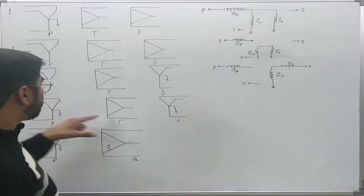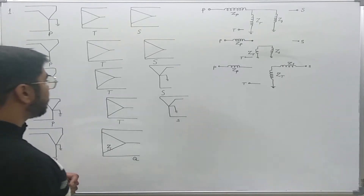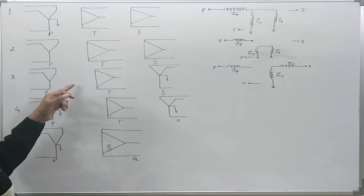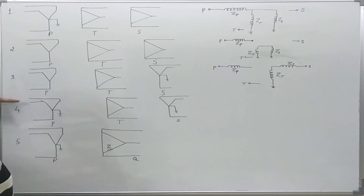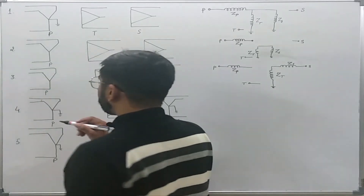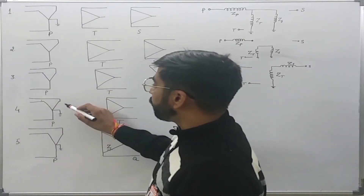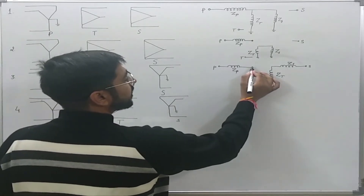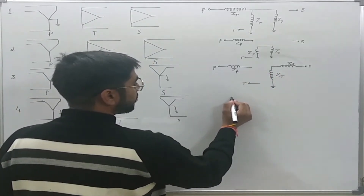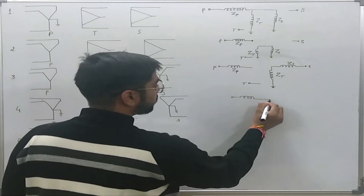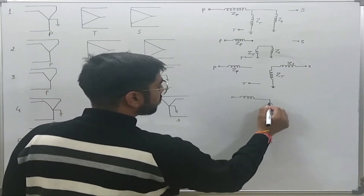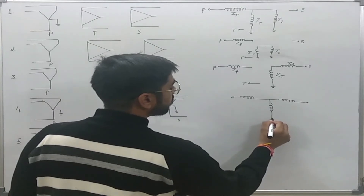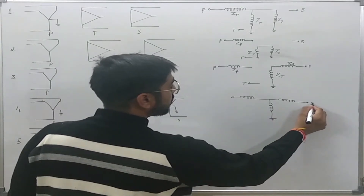The fourth one is a special case of the third. Here, zero sequence current can also flow on the primary side since its neutral is connected to ground. The only change is connecting this side to the reference, so the equivalent zero sequence network is extended accordingly.